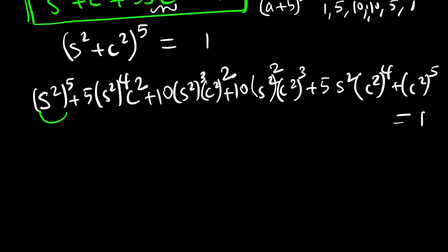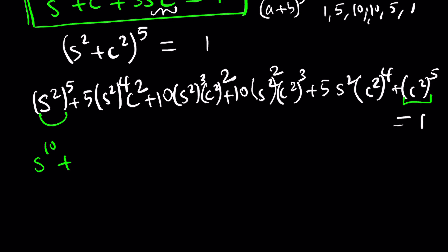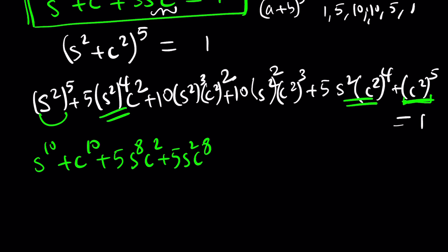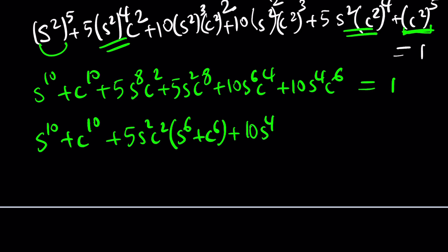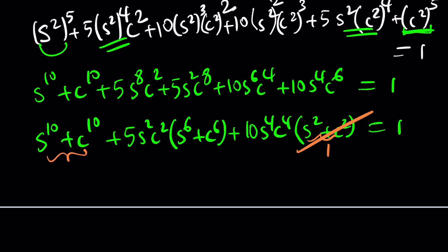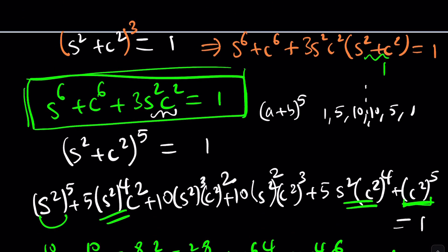Putting this in a more organized manner: s to the tenth plus c to the tenth, plus 5 s squared c squared times the quantity s to the sixth plus c to the sixth, plus 10 s to the fourth c to the fourth times the quantity s squared plus c squared, and that quantity equals 1. So this simplifies nicely. We know s to the sixth plus c to the sixth from the cubic identity, and we know s squared plus c squared equals 1.